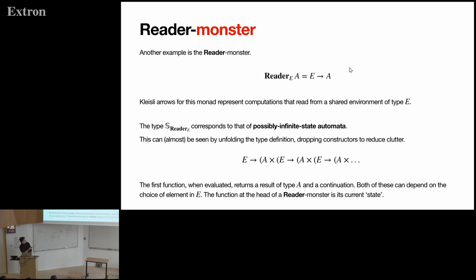And another example are reader monsters. So the effect of the underlying monad here is reading from a shared environment. So the resulting monster needs to read from some environment at every step along the stream. And this effectively gives you a kind of state machine, where the current state of the monster or the state machine is the function at the head of the stream. And the state space is functions from E to A. So if you restrict yourself to a subset of these, then you get effectively finite state machines.